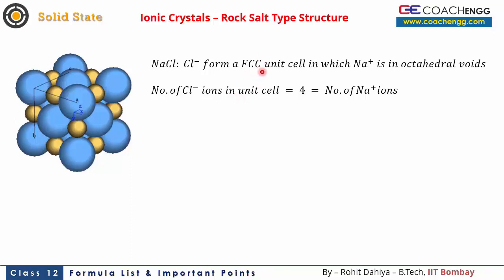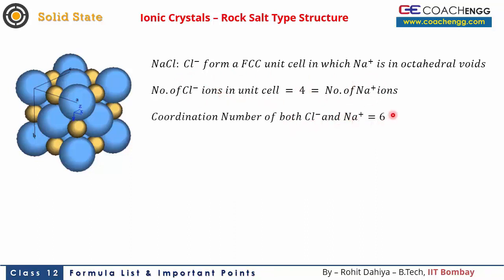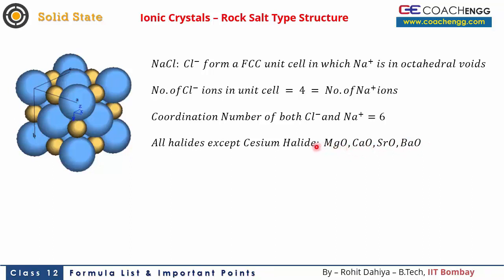The coordination number of both Na⁺ and Cl⁻ is 6, meaning each has 6 nearest neighbors. All halides except cesium halide, and also MgO, CaO, SrO, and BaO, show this rock salt structure. For the geometry: along the side, 2r(anion) + r(cation) = edge length 'a'. Along the face diagonal, 4r(anion) = √2 × a. From these two equations, the cation-to-anion radius ratio works out to 0.414, meaning octahedral voids are filled.